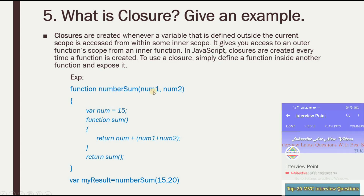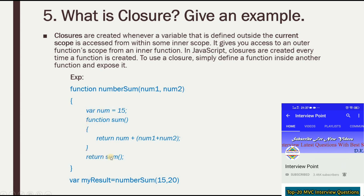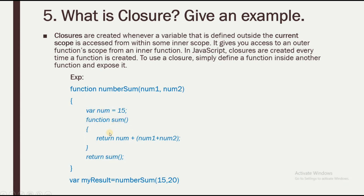In the example, we have a function 'numberSum' with two parameters, num1 and num2. Inside it, there is an inner function 'sum' that returns the sum using those parameters as local variables. When exposed, calling it gives us an output like 35 + 15 = 50. This demonstrates the closure concept. A separate detailed video on closures will be created if requested.